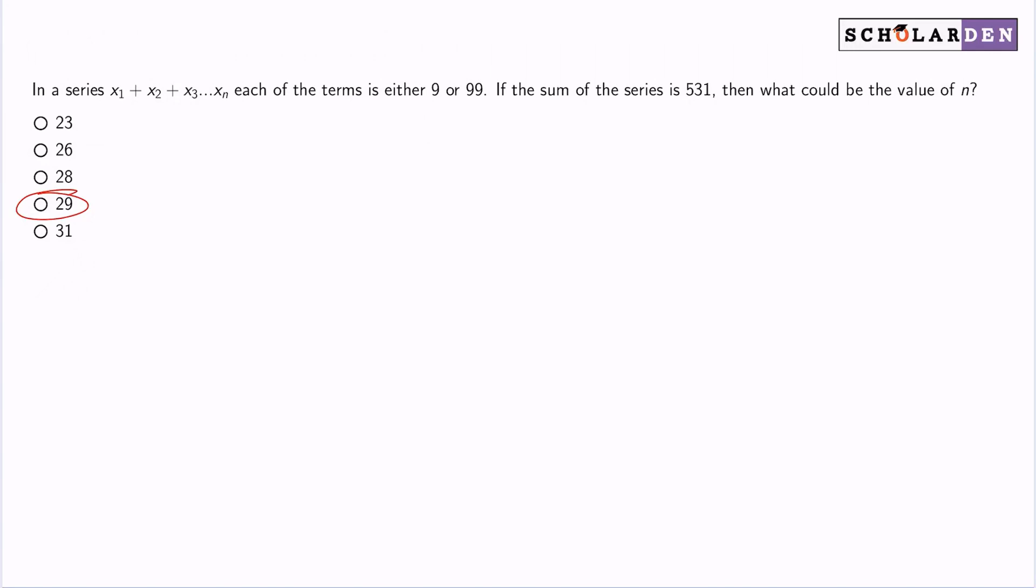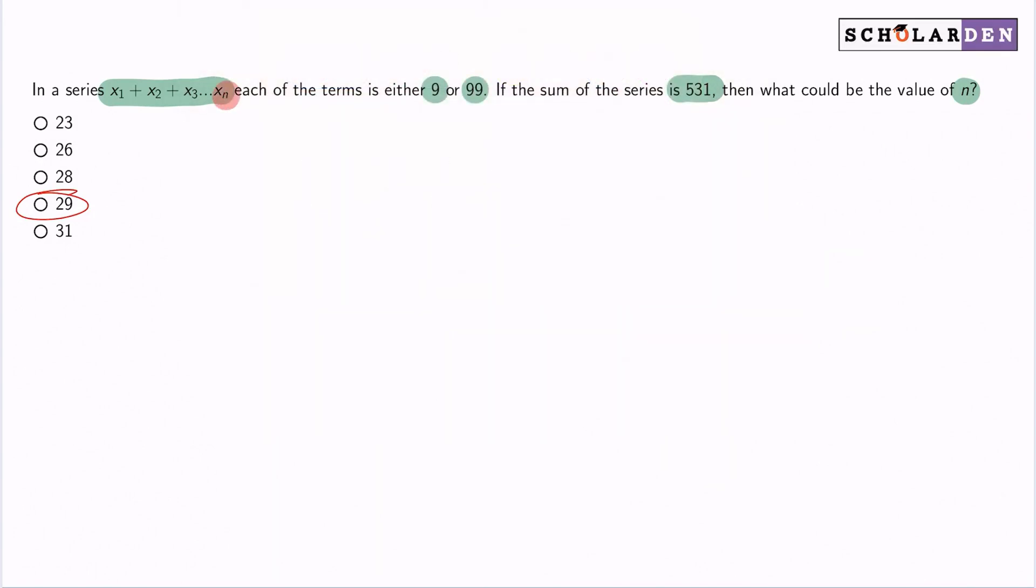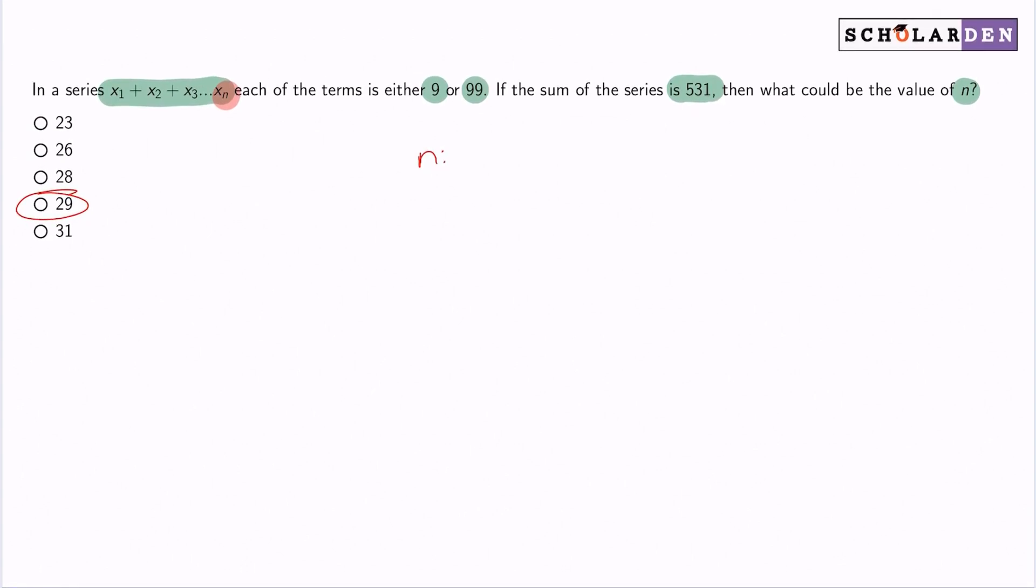We see that this series is the sum of a bunch of numbers, but every number is either 9 or 99. If the sum of the series is 531, then we want to know what n is. And to figure out what n is particularly, we look right here. We see that, first term, second term, third term, nth term. So n indicates the number of terms.